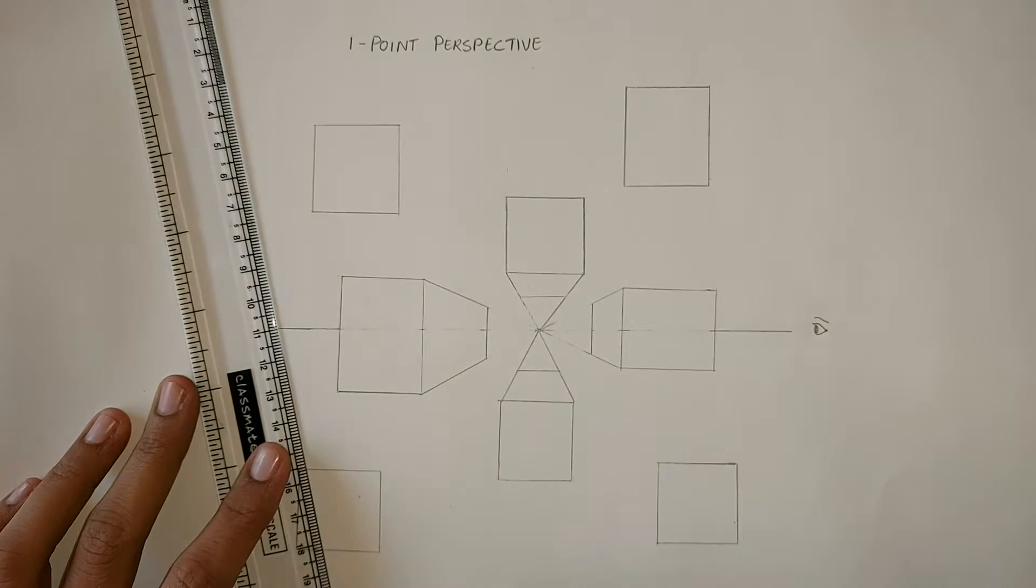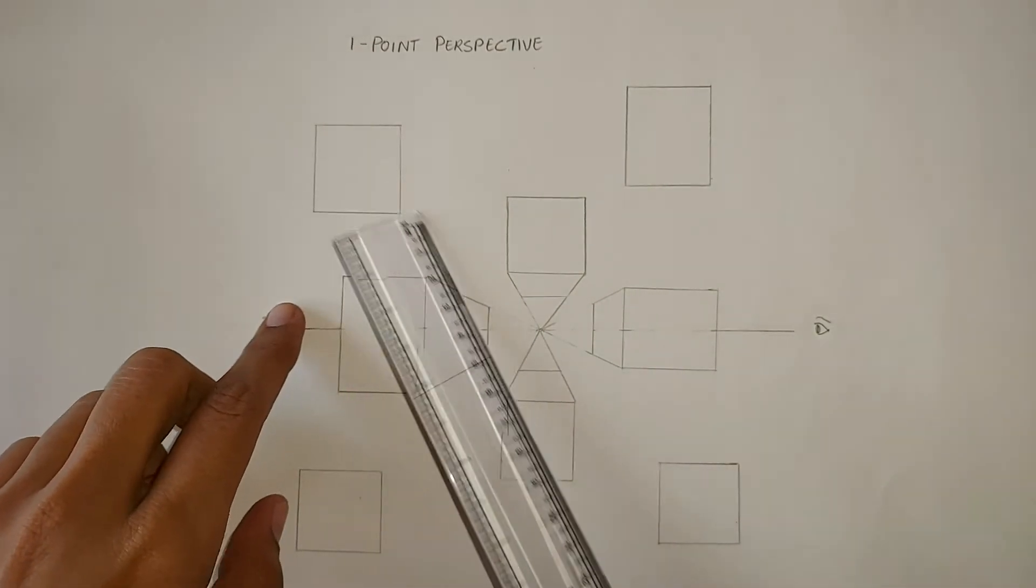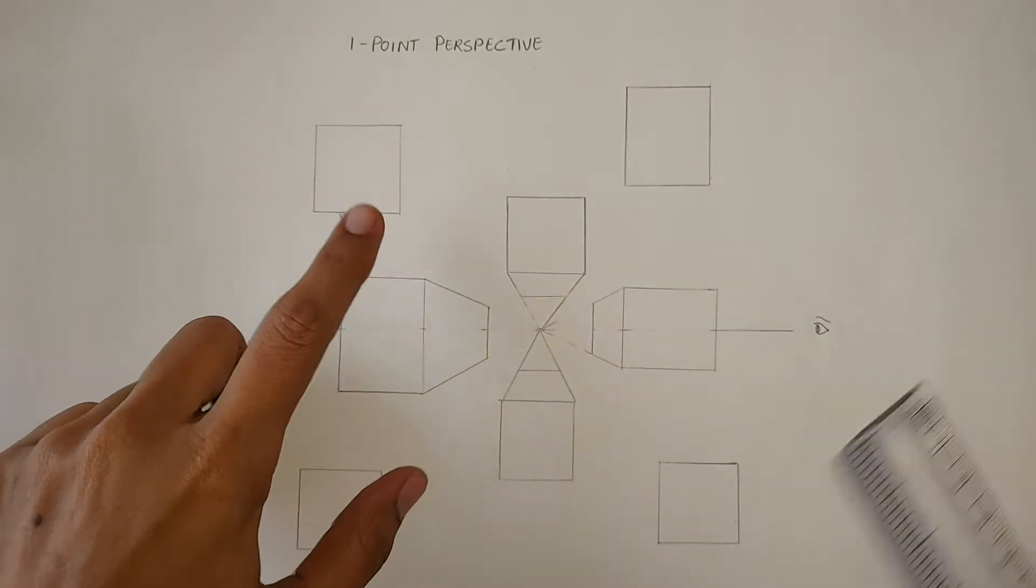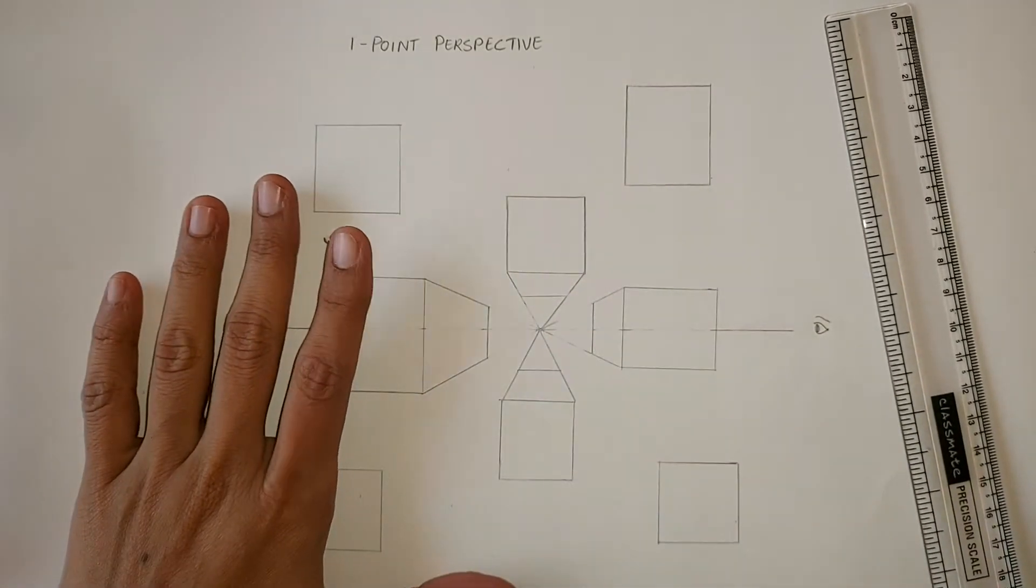Let's talk about an instance where we are going to see three sides of the cube. Now, it is going to be at a diagonal position after these sides and not on the horizon line.